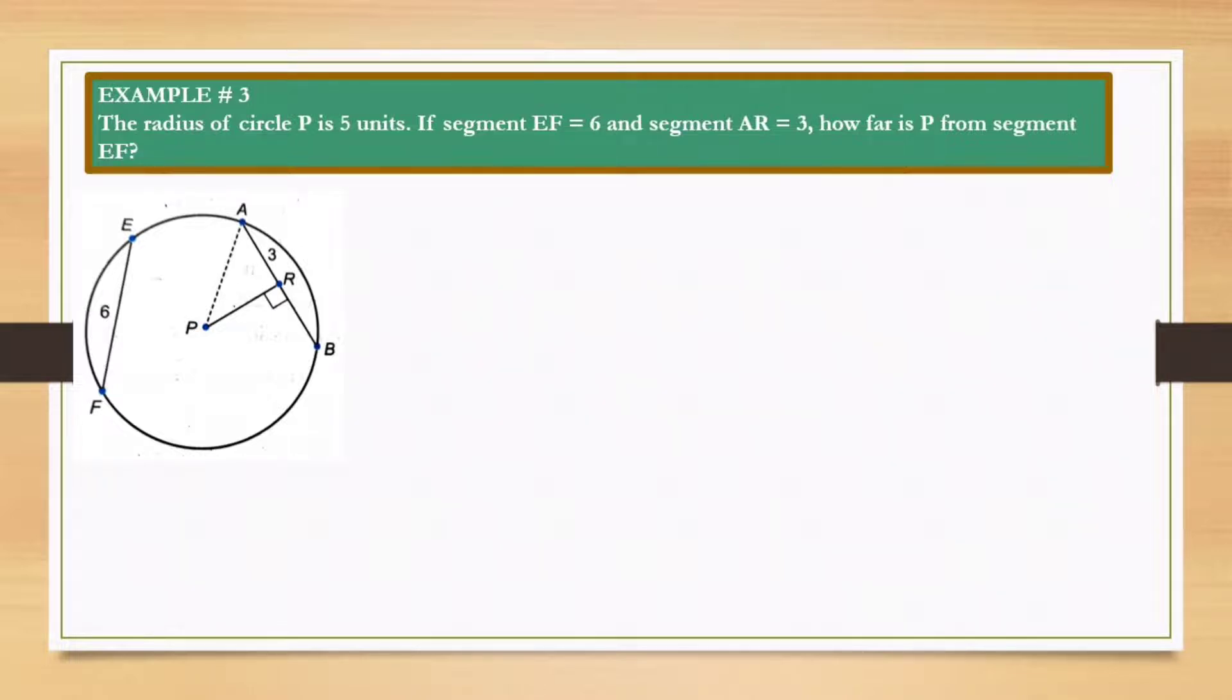For our example number 3, it is given that the radius of circle P is 5 units. If segment EF is equal to 6 and segment AR is equal to 3, how far is point P from segment EF? A segment that is perpendicular to a chord bisects the chord. So AB is equal to 2AR because this segment bisected segment AB. Therefore, AR is equal to RB. Since we have 2 times 3, we already have 6. Therefore, AB is equal to 6 units.